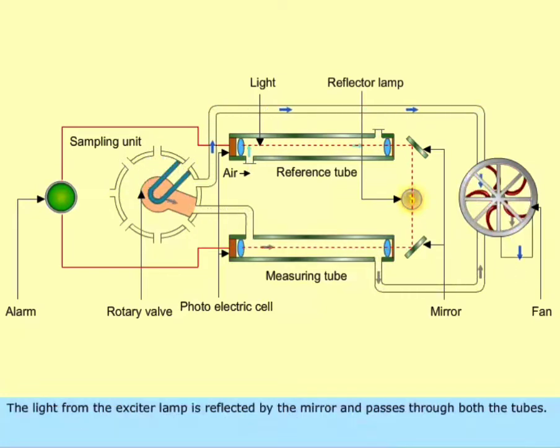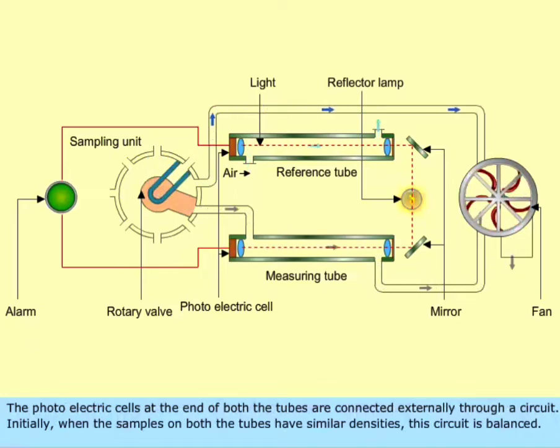The light from the exciter lamp is reflected by the mirror and passes through both the tubes. The photoelectric cells at the end of both the tubes are connected externally through a circuit. Initially, when the samples on both the tubes have similar densities, this circuit is balanced.